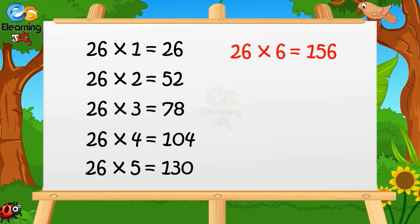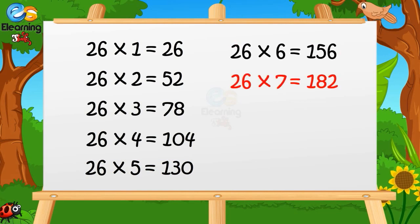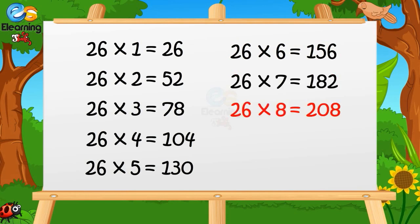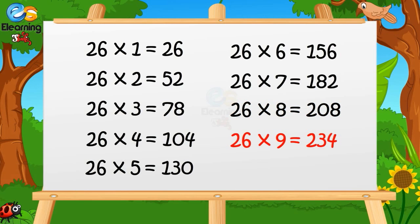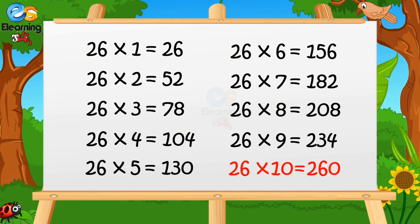26 sixes are 156. 26 sevens are 182. 26 eights are 208. 26 nines are 234. 26 tens are 260.